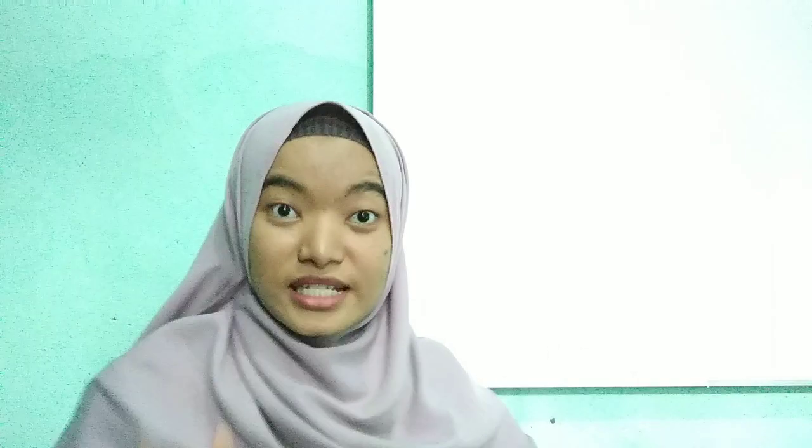In English consonants, there is voicing. What is voicing? Voicing is produced when the vocal folds vibrate. There are two kinds of voicing: voiceless sounds and voiced sounds.